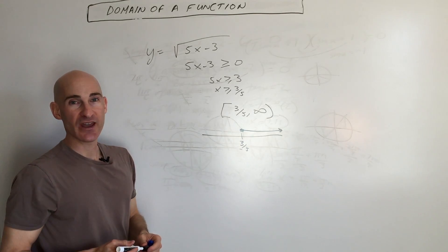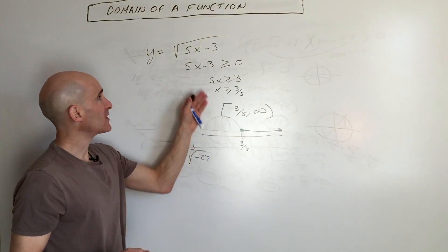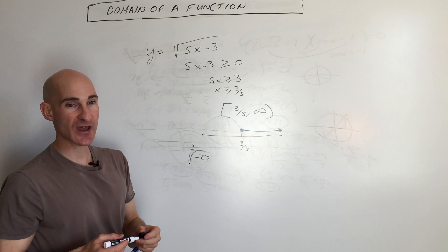You can take the odd root of a negative number, like the cube root of negative 27. That's okay. That's just going to be negative 3. But we can't take the even root of a negative, so that's how we would approach that one.